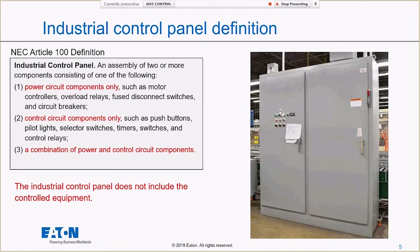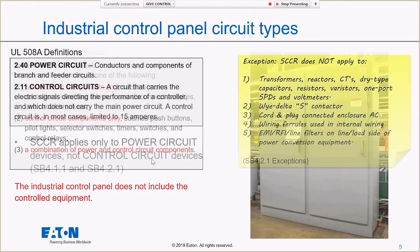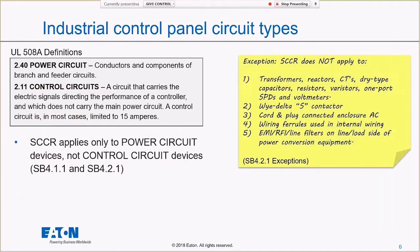According to NEC Article 100, an industrial control panel is an assembly of two or more components — it's got to be at least two — that consist of power circuit components, control circuit components, or a combination of power and control circuits. The industrial control panel does not include the controlled equipment. If it's not in the box, it's not part of the panel; it has to be inside the box to be considered part of the industrial control panel.